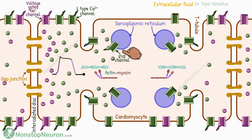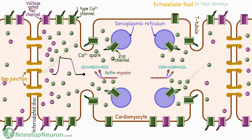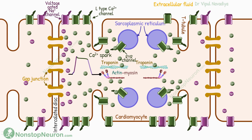This is called calcium-induced calcium release. A single release event from a local cluster of calcium-release channels is called a calcium spark. Many such sparks inside the cell cause a rise in cytosolic calcium concentration. The calcium goes to the contractile filaments and binds with troponin C on thin filaments. From here, the process is similar to that seen in skeletal muscles — repeated myosin cross-bridge cycles cause muscle contraction. So this is the process that links the excitation of the cell to contraction.